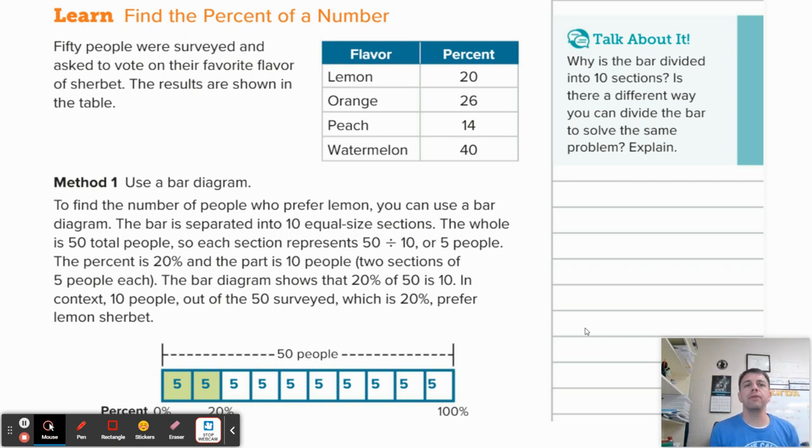So let's take a look at what we're trying to do today. Consider this: 50 people were surveyed and asked to vote on their favorite flavor of sherbet. The results are shown in the table. Now notice one thing about this table. Normally we're given numbers like 20 people prefer lemon, 26 prefer orange, but notice this isn't the amount of people, this is the percent. So 20% of people like lemon. So 50 people were surveyed, 20% of them prefer lemon. Well how many is that?